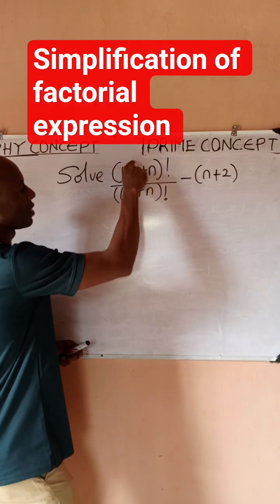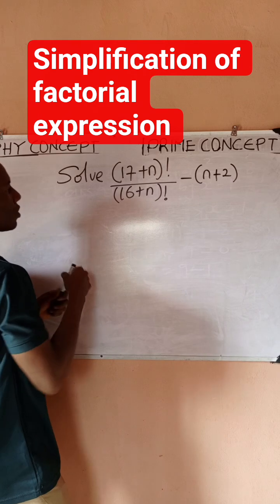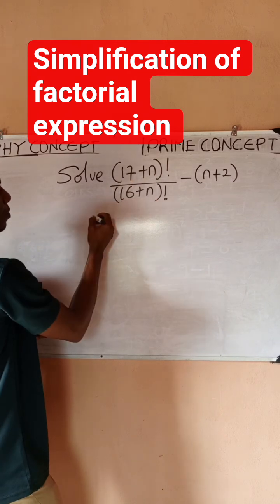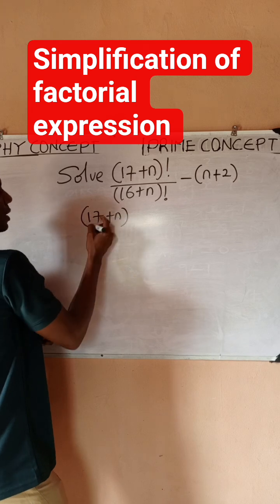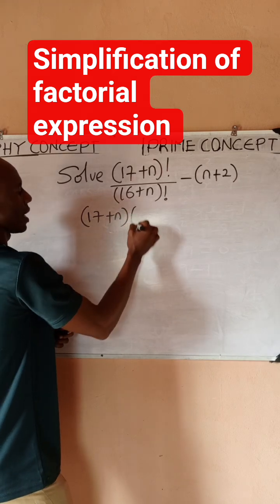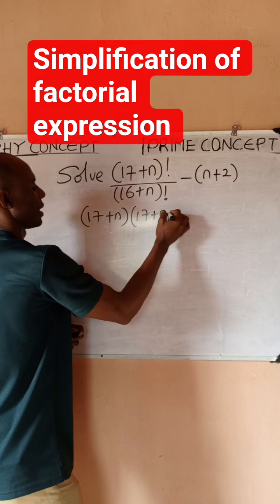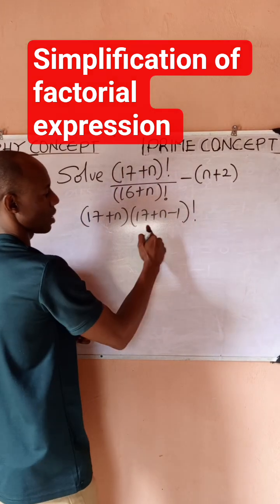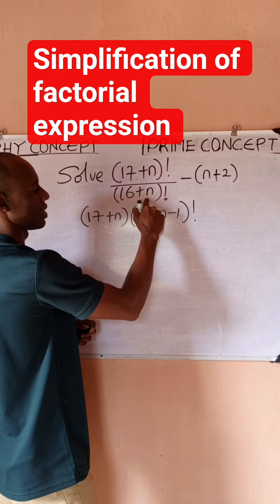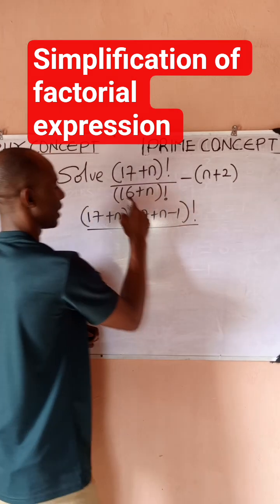So quickly, this top one would give me (17+n) into... I would have (17+n), then I'll subtract one, then I'll put factorial. I could continue, but I want to stop here because it will be the same as this. All divided by (16+n)!.